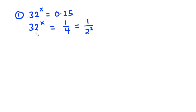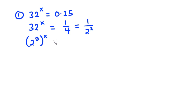Now 32 is equal to 2 exponent 5. So we have 2 exponent 5, all exponent x, which is equal to 2 exponent negative 2.